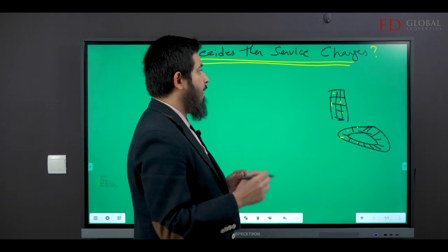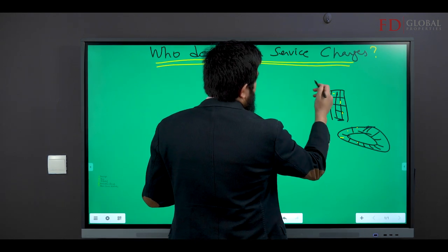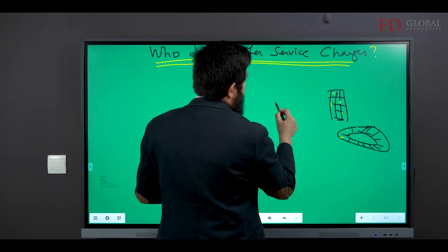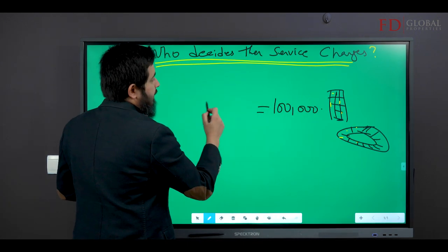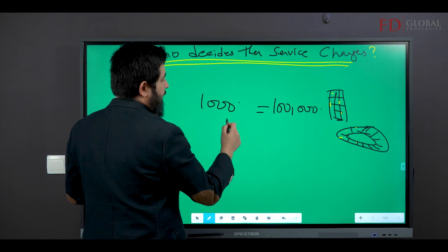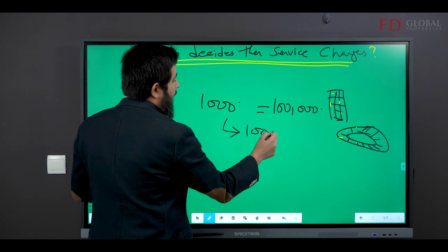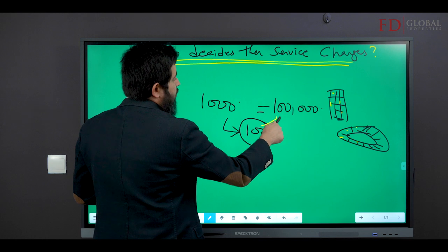Essentially speaking, if the total service charges of a building are a hundred thousand dirhams and there are one thousand people living in that building, everybody's going to pay a hundred, which then translates to a hundred thousand, which then goes to maintaining the building.